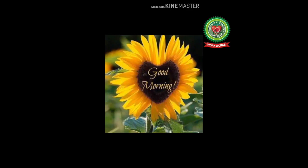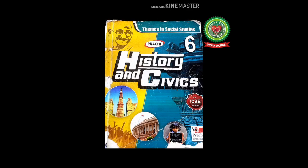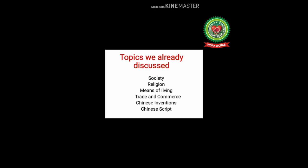Good morning students, how are you all? Take out your book of History and Civics of class 6th. Till now we have discussed the six main features of the Chinese civilization, which are society, religion, means of living, trade and commerce, Chinese inventions, and Chinese script.